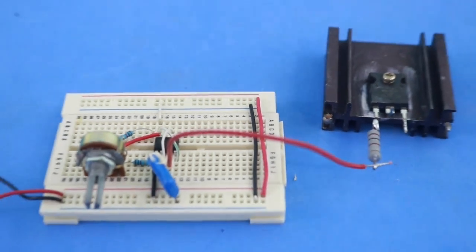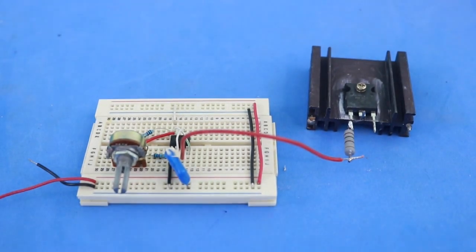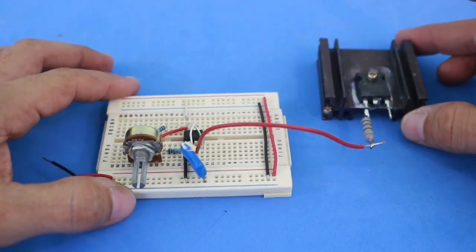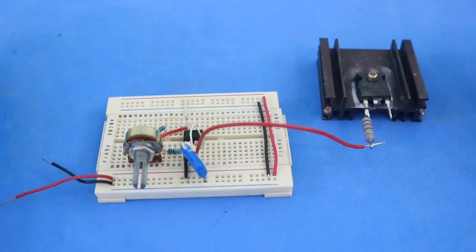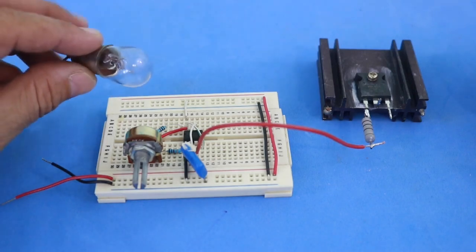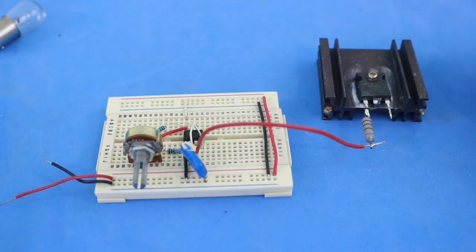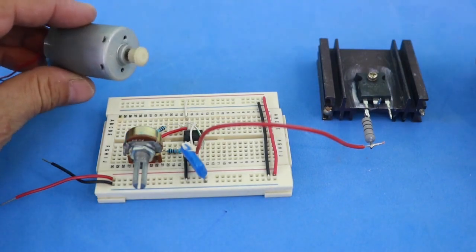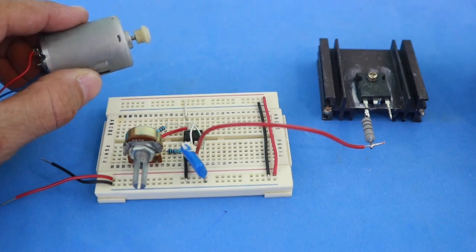Hello, welcome to Ludic Science. Today I will show you this simple dimmer circuit that we can use to vary the intensity of an incandescent DC lamp and we can also use it for varying the speed of a DC motor.